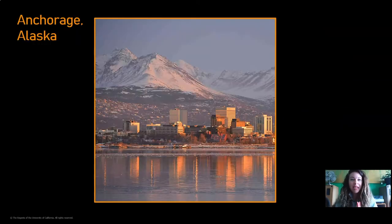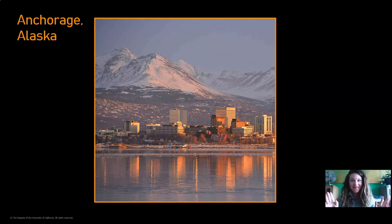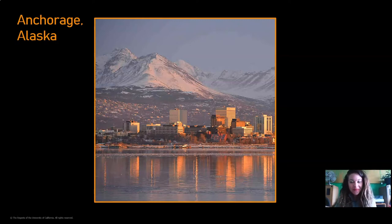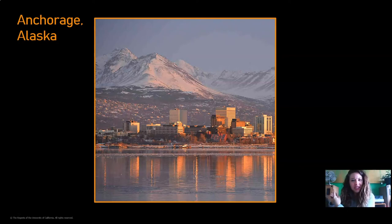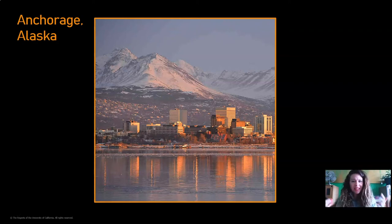We're going to practice making predictions about weather over time by using three different cities. Take a look at this city. This city is called Anchorage, and it's in Alaska. Do you know anything about Alaska? If you've never heard of Alaska before and don't really know anything about the weather there, take a look at this picture. Does it look like a warm place or a cool place? I think it looks like a cool place because those mountains are covered in snow, and I know that snow is pretty cold.